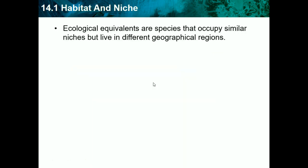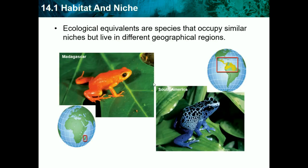Ecological equivalents are species that occupy similar niches but live in different geographic areas. For example, two types of frogs that have the same niche — one lives in Madagascar off the coast of Africa, and the other lives in South America.